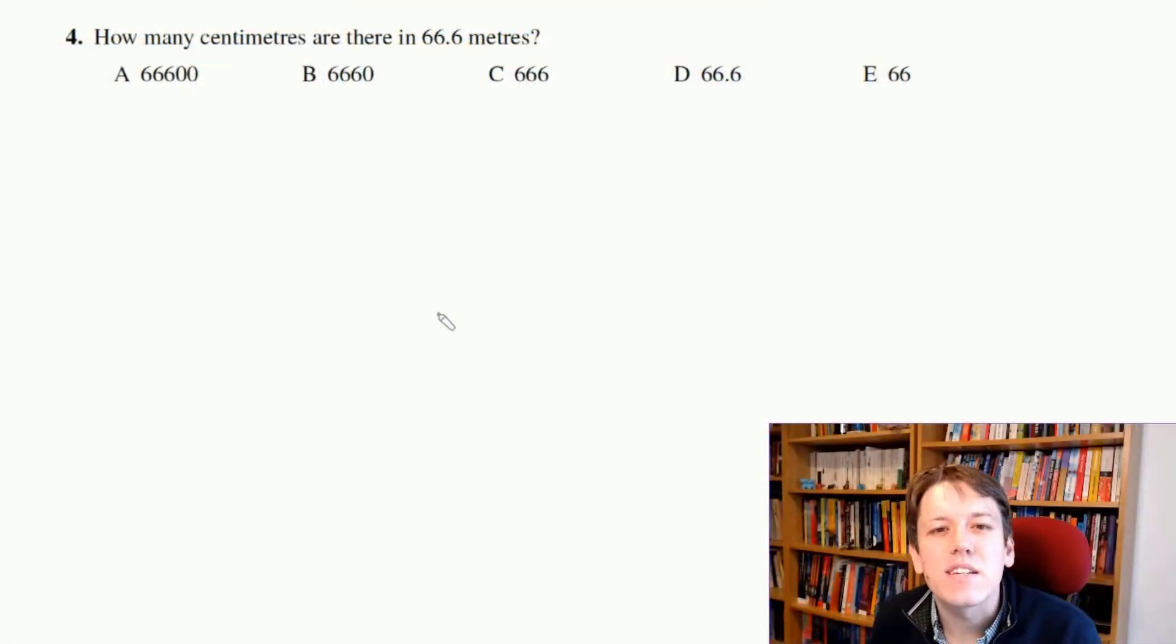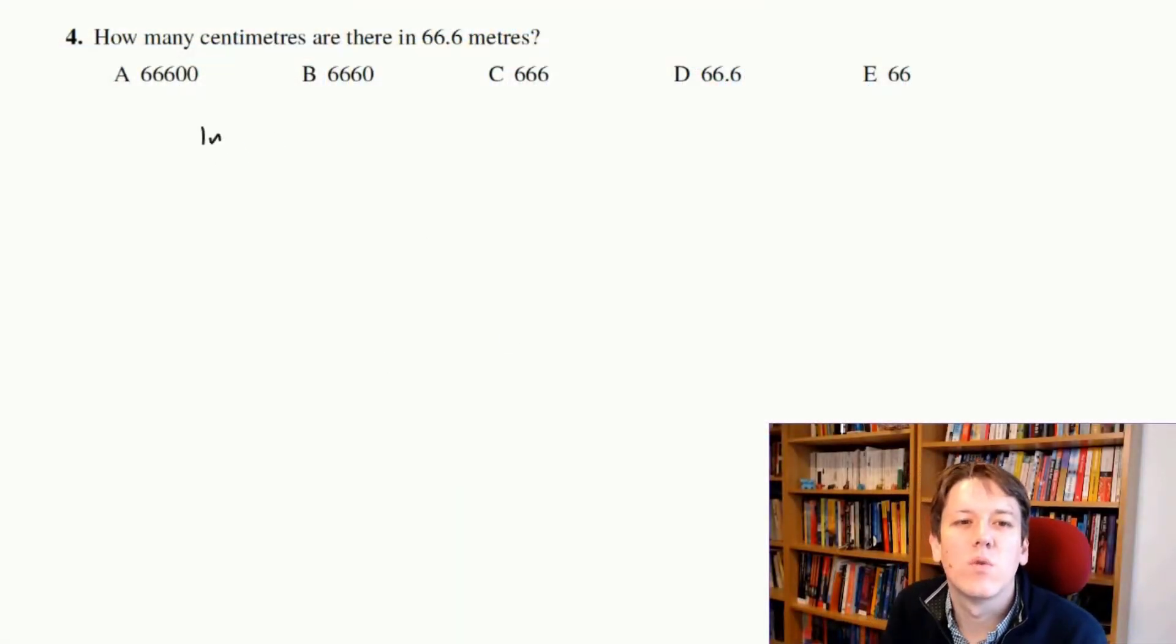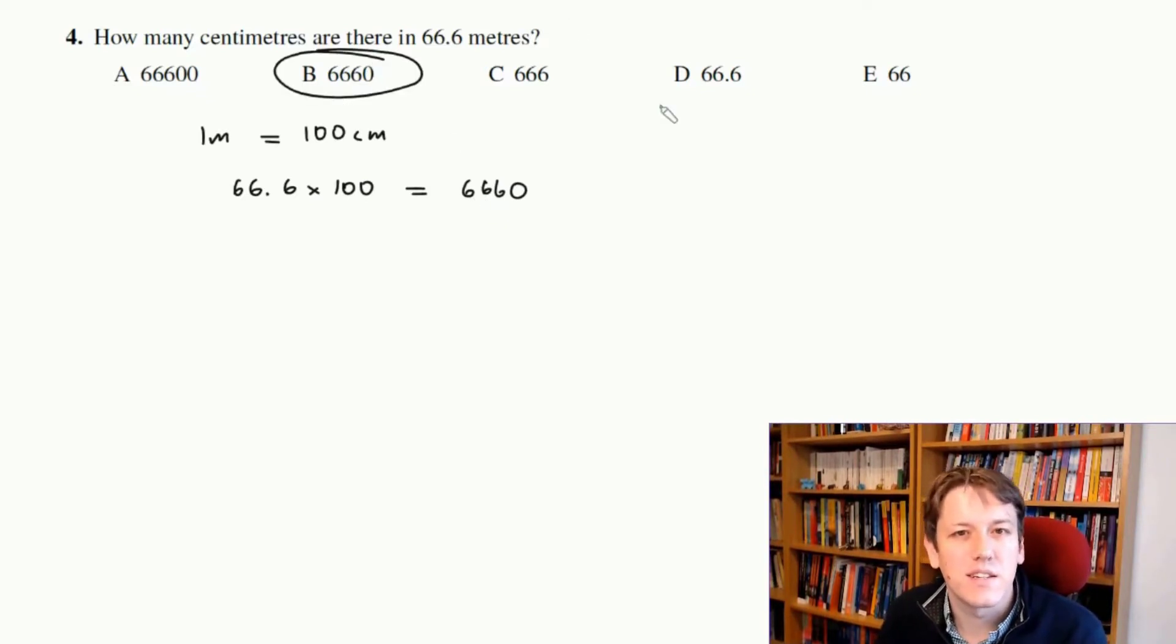How many centimeters are there in 66.6 meters? Well, 1 meter is 100 centimeters, so to go from 66.6 meters to centimeters, I'm going to have to do 66.6 multiplied by 100, so times 10 would make 666, times another 10, 6,660, and so the answer is B, 6,660.